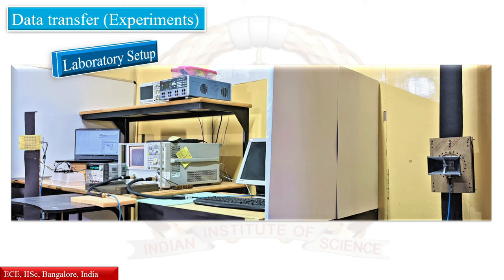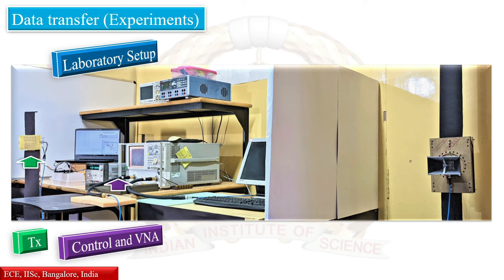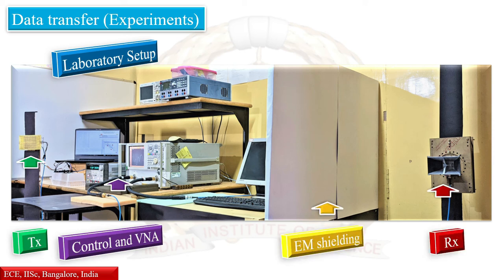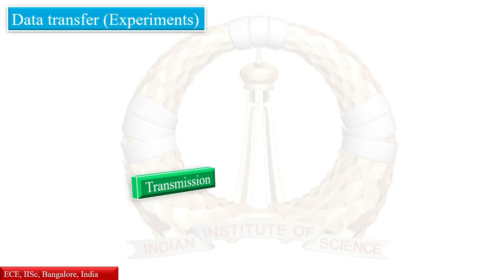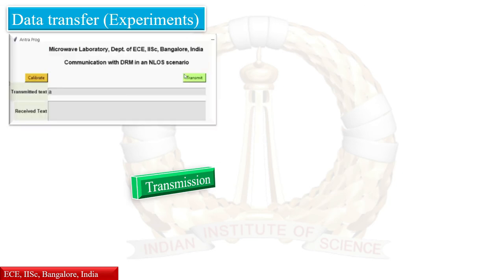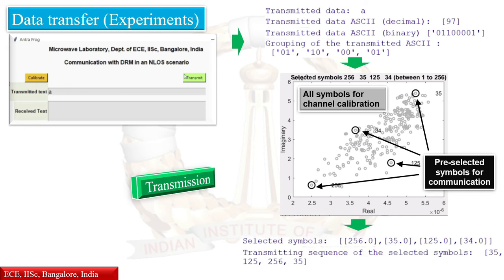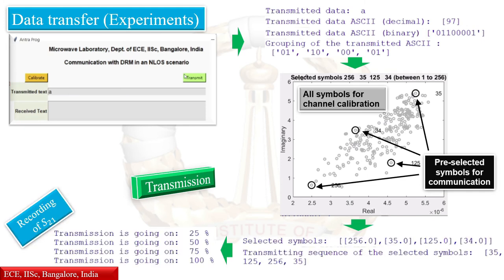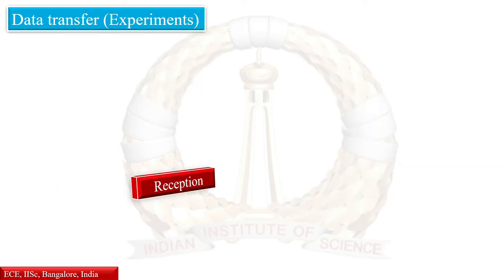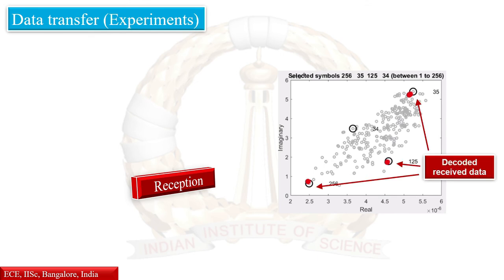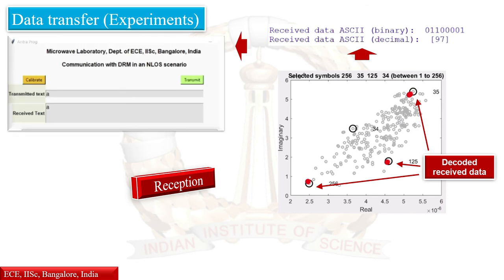Having demonstrated the feasibility and core advantages of MBM, we demonstrated data transmission using the scheme. Here, a text string is entered in a GUI, which is converted into ASCII and grouped into sets of two bits. These sets decide one of four pre-selected symbols identified by the corresponding state of the metasurface. The complex S21 from the VNA is downloaded to a computer that maps the constellation points corresponding to the transmitted bits, based on a pre-recorded codebook. As you can see, the transmitted string is received back perfectly.